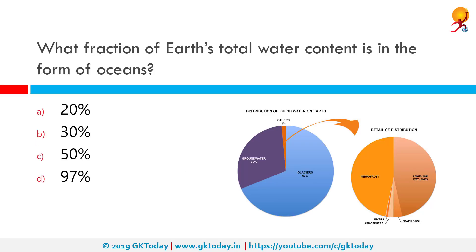What fraction of earth's total water content is in the form of oceans? The correct answer is 97 percent. Of the total volume of water on earth, which is about 1.386 billion cubic kilometers, 97.5 percent is salt water and 2.5 percent is fresh water. Of the fresh water, only 0.3 percent is in liquid form on the surface; the rest is frozen in glaciers. This is why it's so important to conserve fresh water — consumable fresh water is very little in quantity.